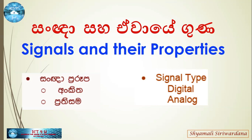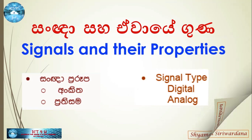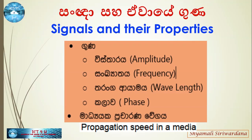We are talking about digital and analog signals. The properties we will discuss are called amplitude, frequency, wavelength, and phase.